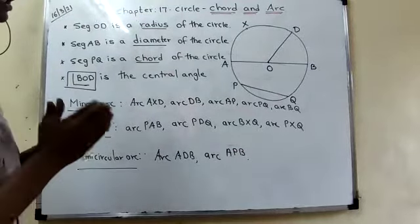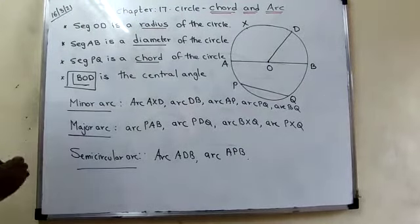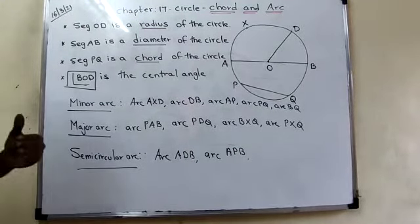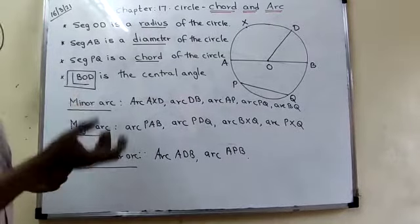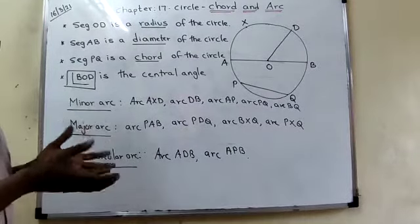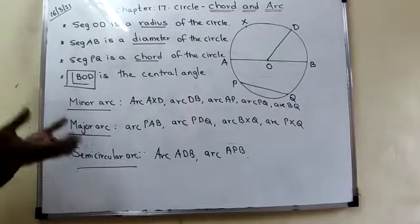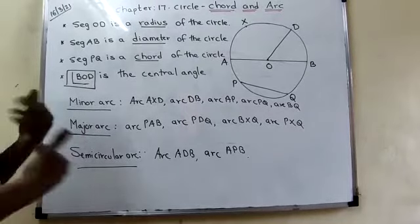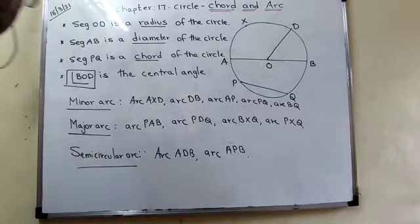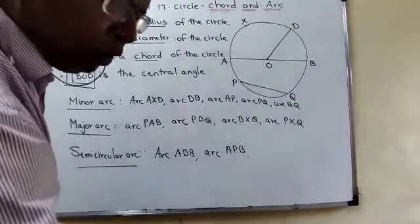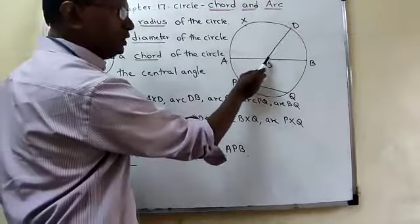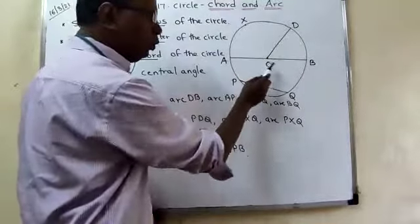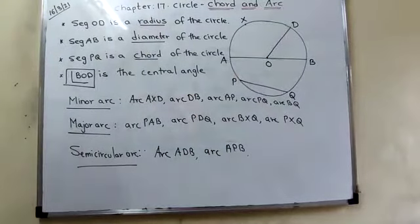You can say it is an introduction. I think all of you have done circles in your 5th standard, 6th standard, and 7th standard — a little bit. Here, what is O? O is the center. With the help of the center you can draw a circle, so O is called the center of the circle.